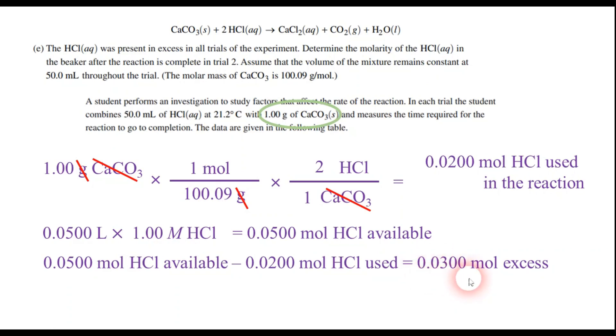Now 0.03 moles are left over, and what was the volume again? Well, it says that the volume remains constant at 50 mils. So we have to divide that by the 0.05 liters. And when you divide that out, I get that the molarity of my HCl at the end of the reaction has dropped from one molar down to 0.600 molar. So I think this would be a two-pointer. But I think they would give you one point for getting the moles of HCl, and then I think they'd give you one other point for the rest of this stuff and getting the correct answer of 0.600.